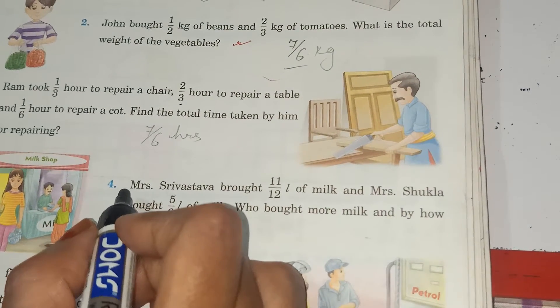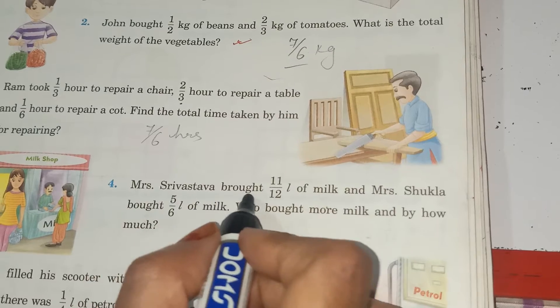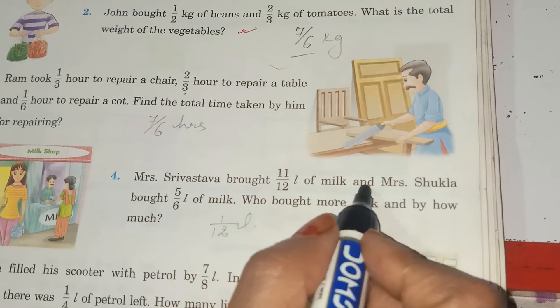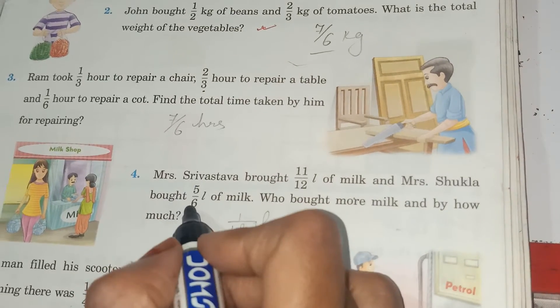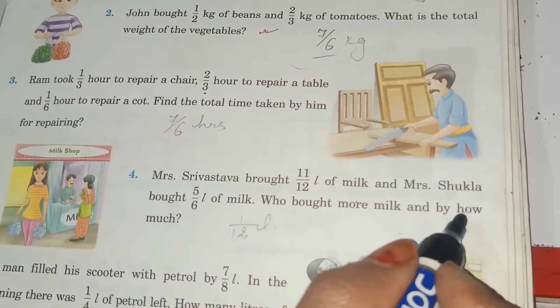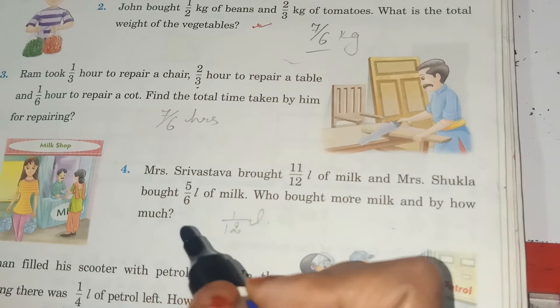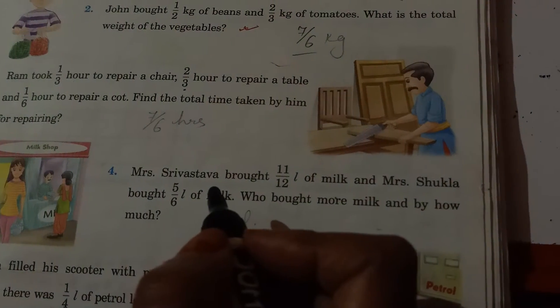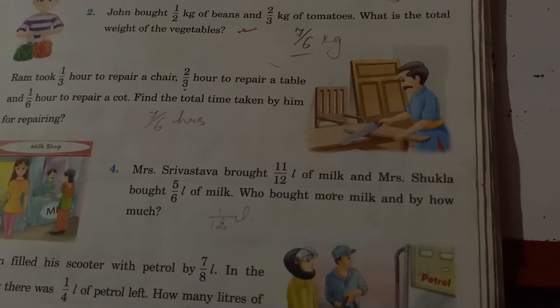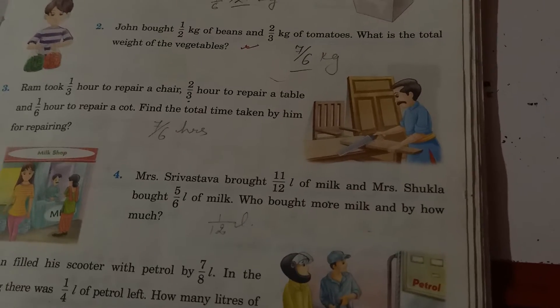Number 4, Mrs. Srivastava brought 11 by 12 litre of milk and Mrs. Shukla brought 5 by 6 litre of milk. Who bought more milk and by how much? So children, it is little different. That means it is subtract. So by subtraction method, you can do this.